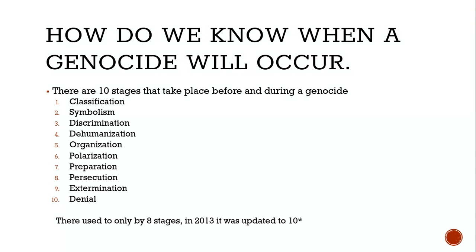The 10 stages of genocide were first outlined by Dr. Greg Stanton at the Department of State in 1996. These 10 stages make a clear connection between ultra-nationalism and genocide. One important thing to remember: genocide can be stopped at any of the following stages.